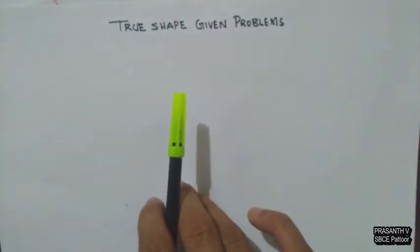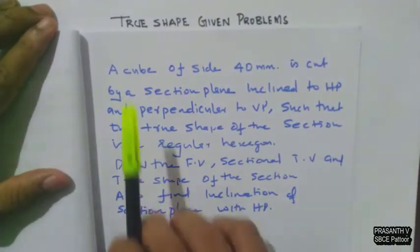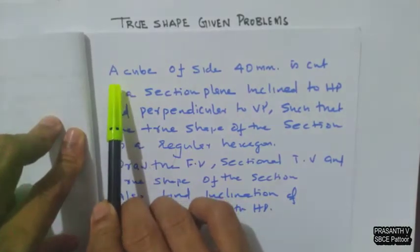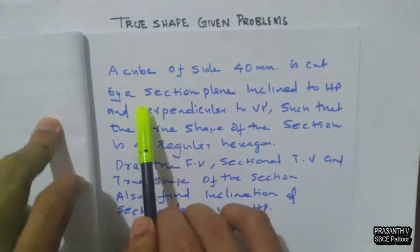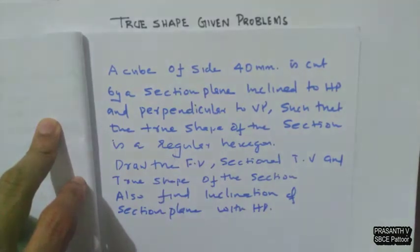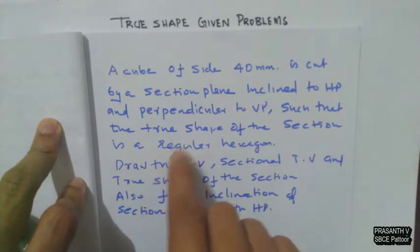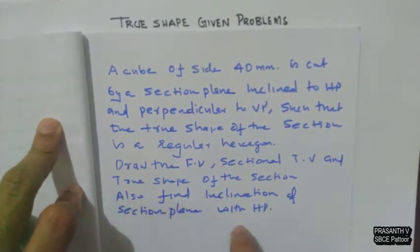Let us consider a problem. This is one of the important problems in this case. The question is: a cube of side 40mm is cut by a section plane inclined to HP and perpendicular to VP, such that the true shape of the section is a regular hexagon. Draw the front view, sectional top view, and true shape of the section. Also find the inclination of the section plane with HP.